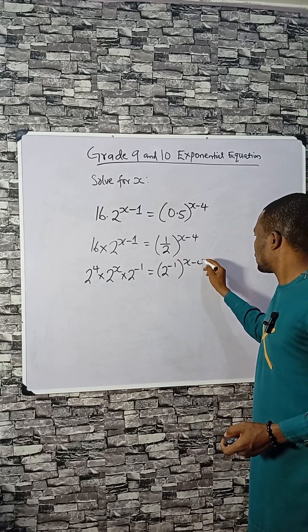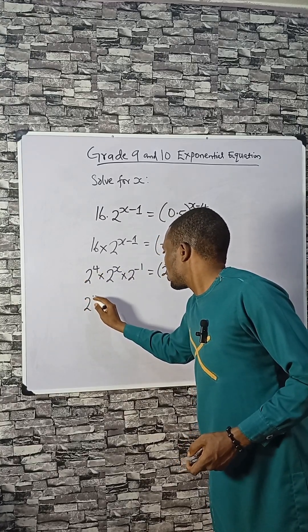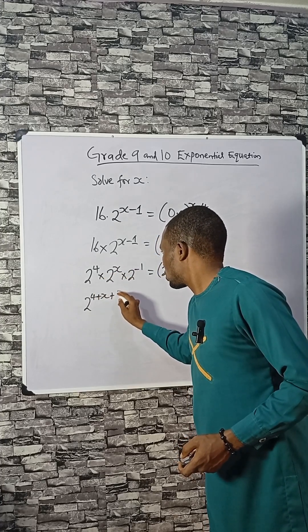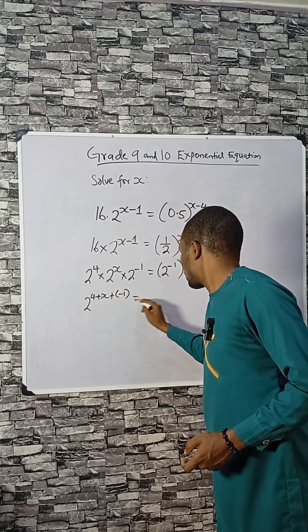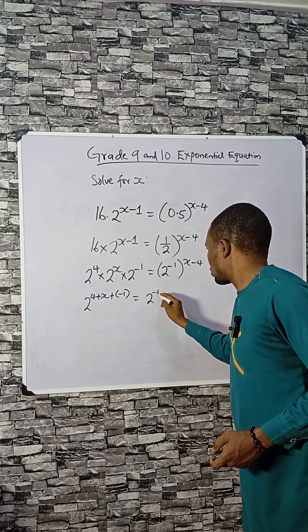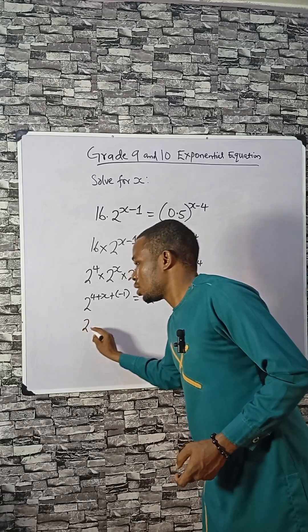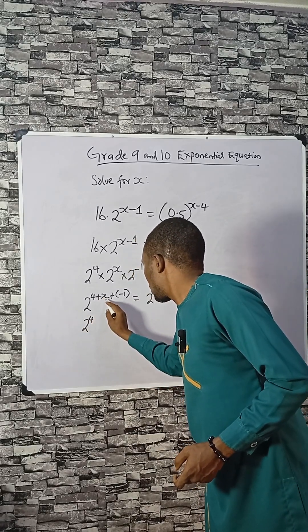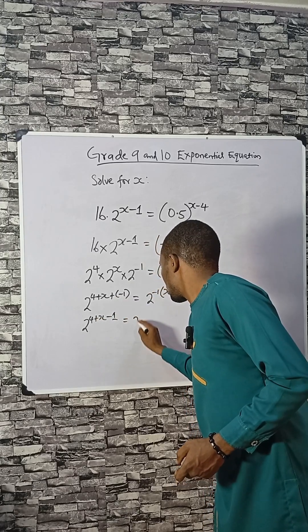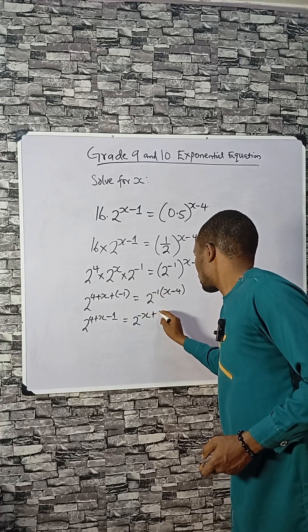Since they have the same base, we can add the powers: 4 plus x. Then the power here can multiply what is here, giving us minus 1 into x minus 4. Adding the terms: plus x, and the minus 1 times x gives minus x, while minus 1 times minus 4 gives plus 4.